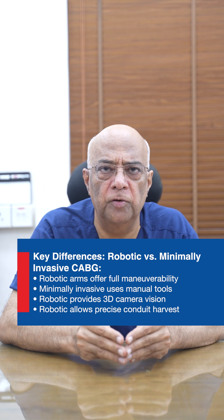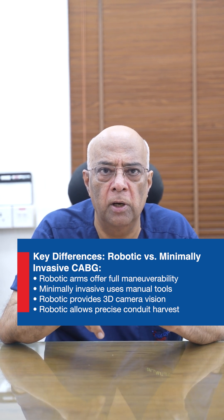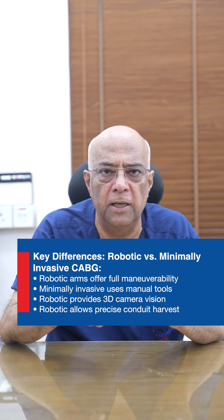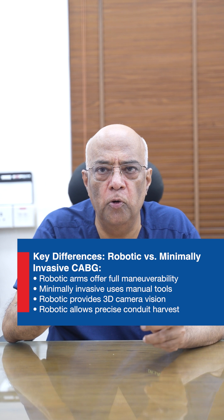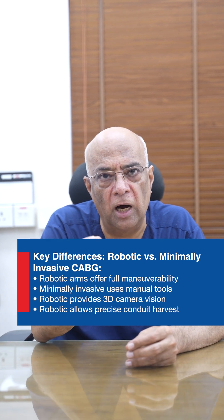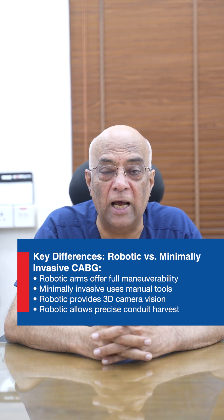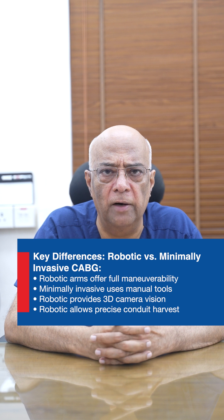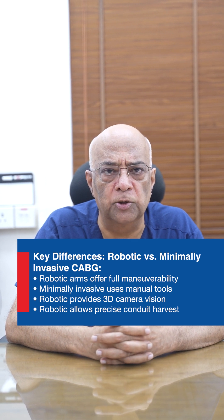The advantage of the robotic arm is that it is a small entry port, and inside it has complete maneuverability, enabling the surgeon to harvest the conduit. Once the conduits are accurately harvested, they can be used for the normal bypass operation as we all know it.